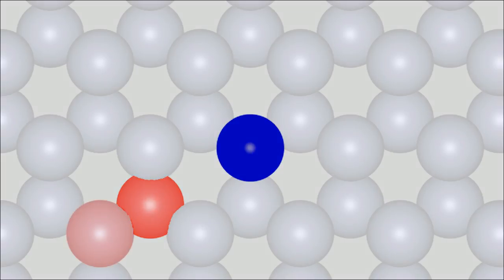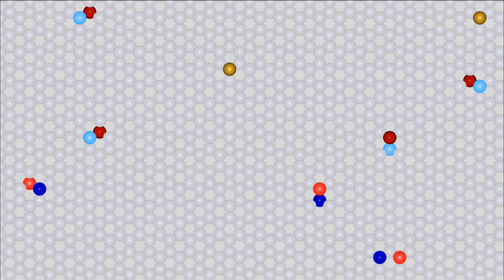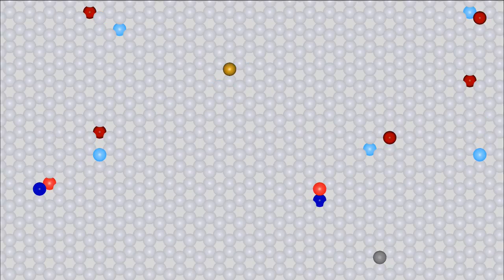Hence, the software isn't calculating a new position of a hole with every step. Randomized breaks are inserted. To keep the computing power low, the software doesn't calculate the forces acting on all electrons of all atoms. Instead, the force acting on a positive charge inside of the crystal lattice is calculated to get the direction of the next electron transfer. Let's start the simulation and observe the movement of electrons and holes.